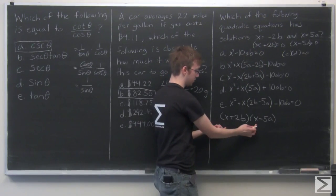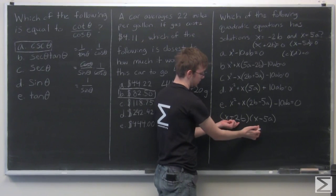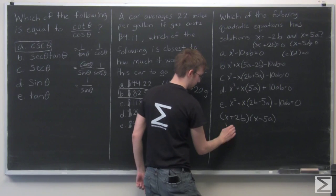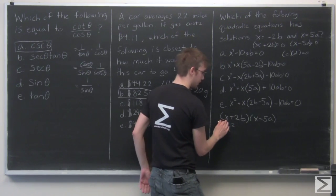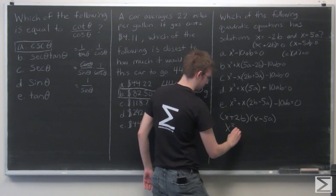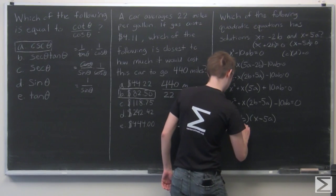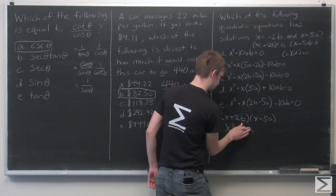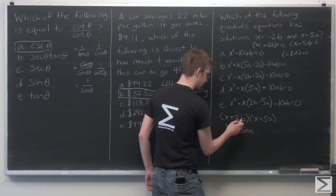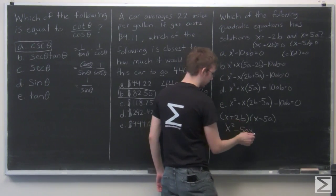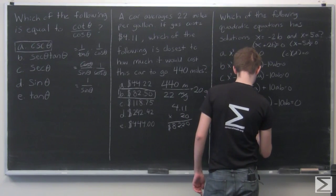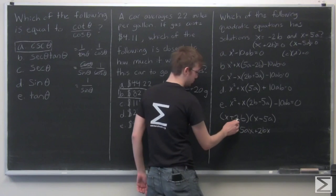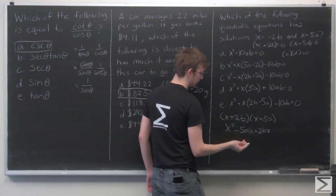So multiply x by x, you get x squared. Multiply x by minus 5A, you get minus 5Ax. Multiply x by 2B, you get positive 2Bx. And 2B times minus 5A, you get minus 10AB.